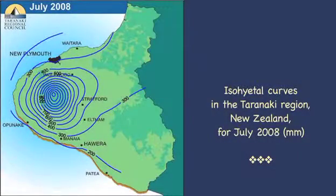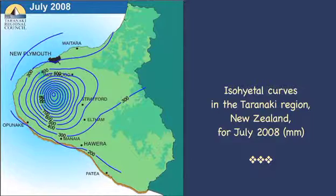The same amount of rainfall does not fall uniformly over the entire catchment. In regional rainfall maps, isohyadal curves, or isohyads, are referred to as isopluvials.